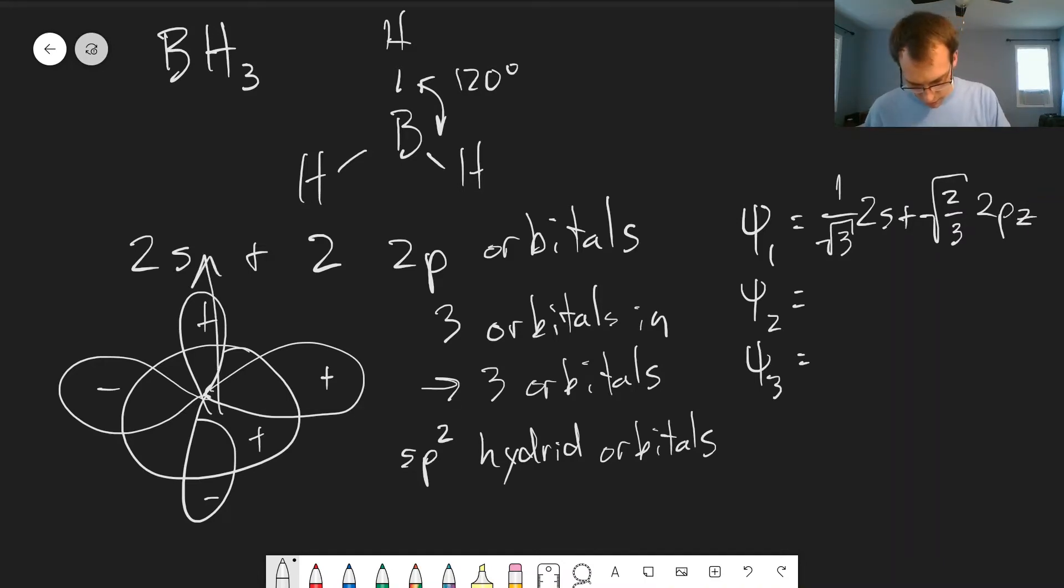So if we take x to be this direction and z to be this direction, then we have 1 over square root of 3 of the 2s orbital minus 1 over square root of 6 of the 2pz plus 1 over square root of 2 of the 2px. And it's not critical that you remember these exact expressions and whatnot. This is just to show you that these have a mathematical basis.